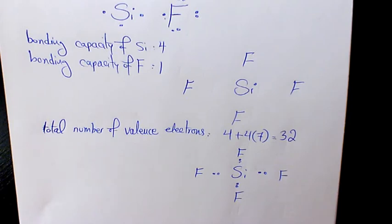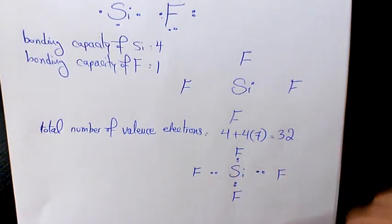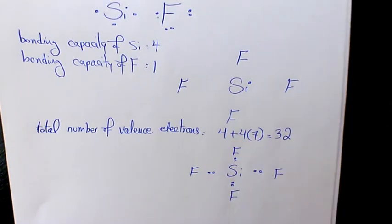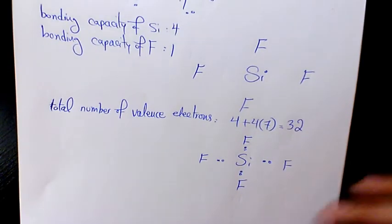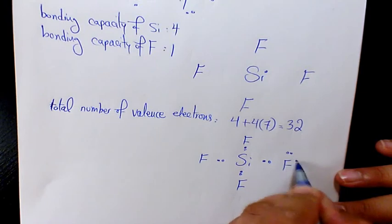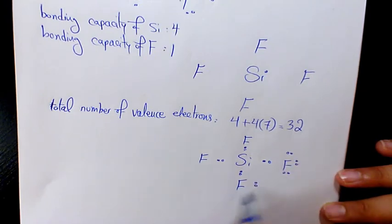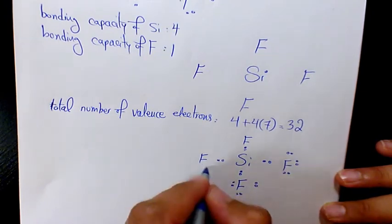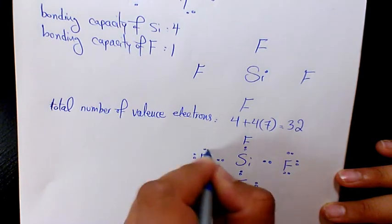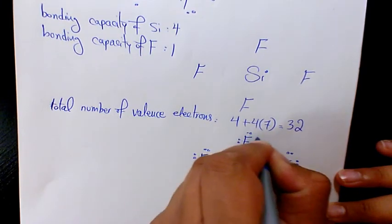The next step is to place pairs of the remaining valence electrons as lone pairs on the surrounding atoms, which is fluorine, not the central atom. We follow the octet rule for fluorine, so each fluorine gets six more electrons to complete its octet — three lone pairs each, for all four fluorines.